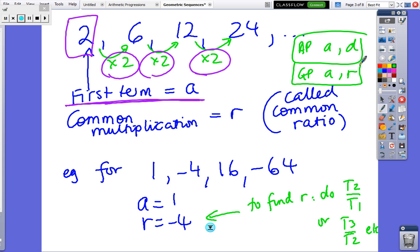For instance, with 1, -4, 16, -64, the first term is A. And then to find the ratio, just divide two terms in a row. So -4 divided by 1, so T2 divided by T1, or T3 divided by T2, and that will give you the ratio. These two terms could be divided, or those two terms could be divided, and you'll still get the same R value.